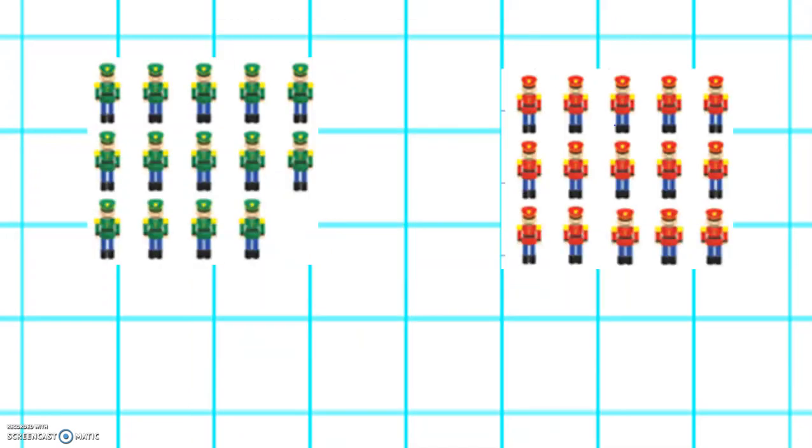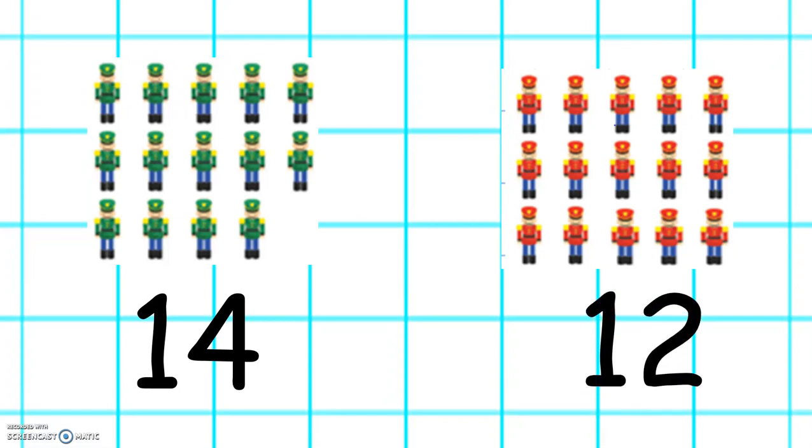Now let's do some counting of the soldiers. We have how many green soldiers here? Count them. And how many red soldiers? Count them. Well done. There's 14 green soldiers and 12 red soldiers.